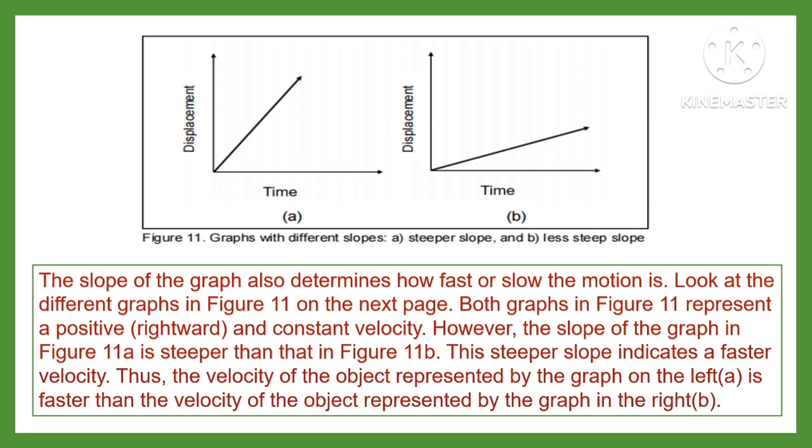Both graphs in Figure 11 represent a positive, rightward, and constant velocity. However, the slope of the graph in Figure 11a is steeper than in Figure 11b. This steeper slope indicates a faster velocity.